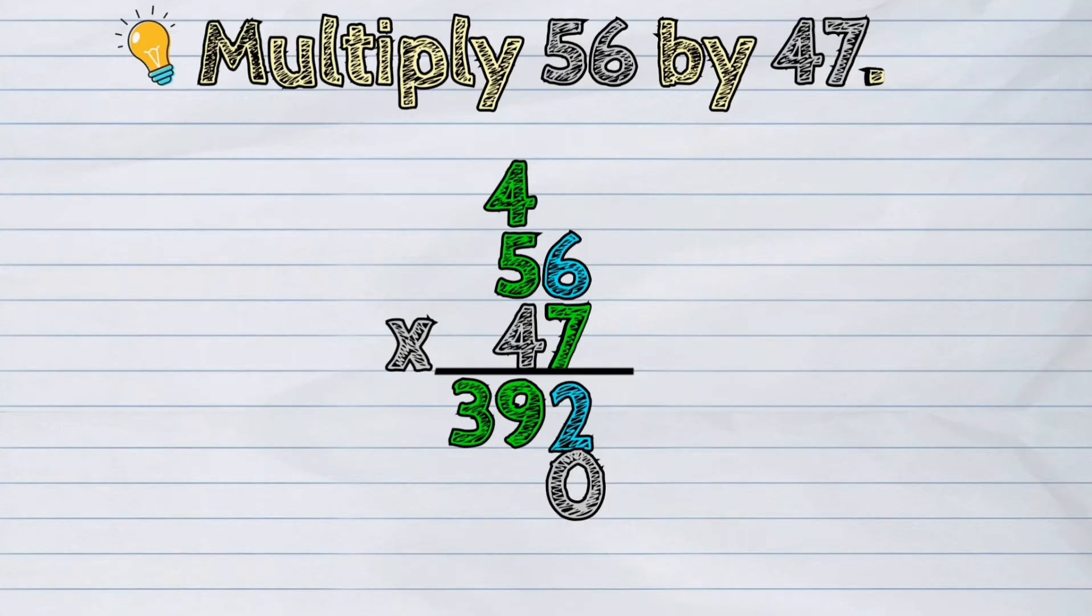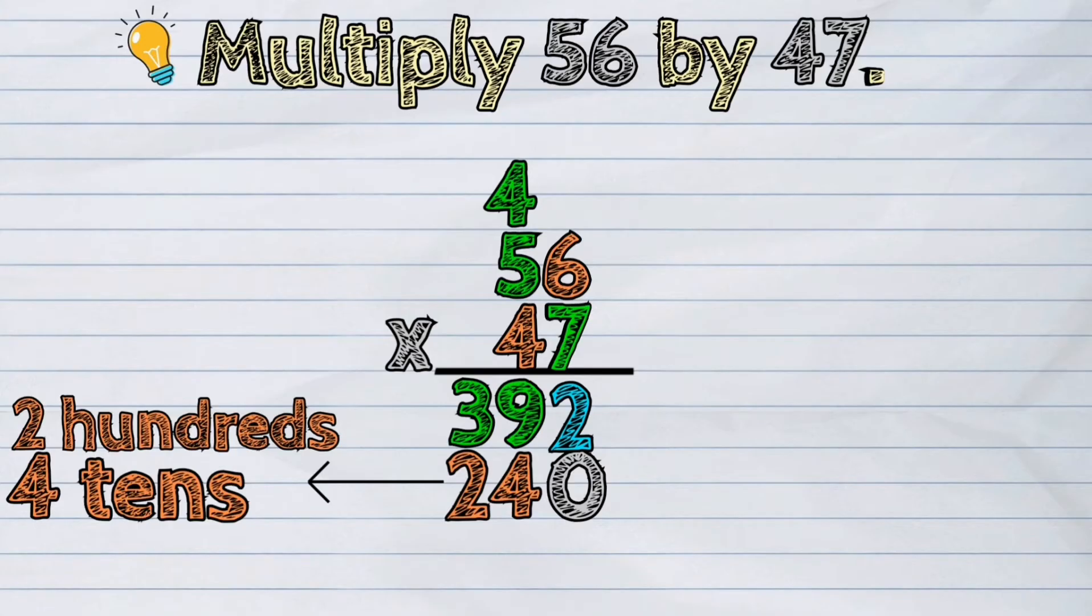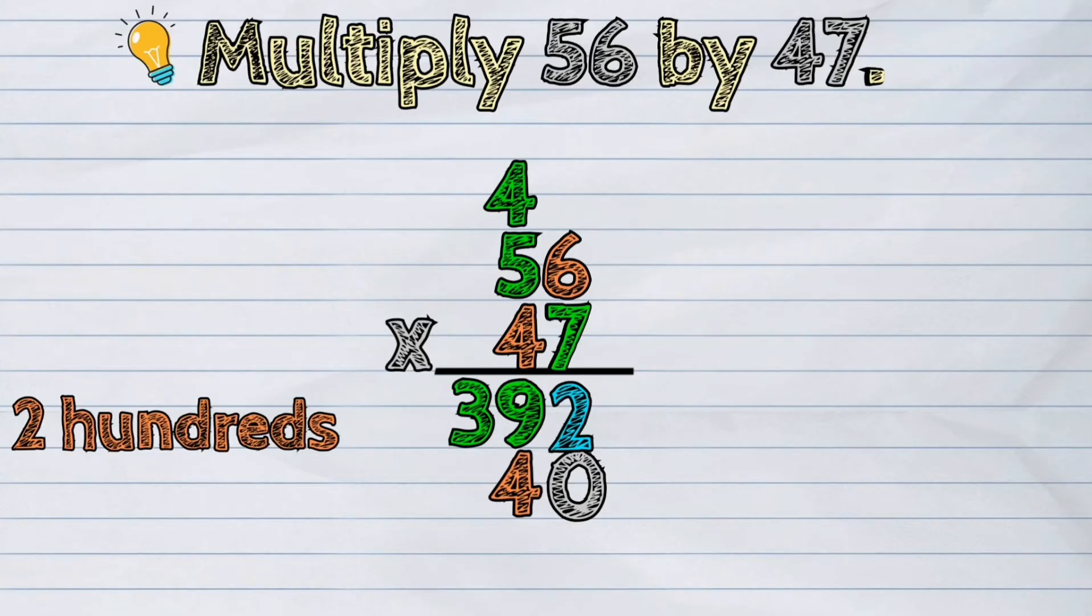Next, multiply the tens on the bottom by the ones on the top. 4 tens times 6 ones is equal to 24 tens. We need again to regroup the number. 24 tens if regrouped is 2 hundreds and 4 tens. Put the 4 tens next to 0 and carry the 2 hundreds above the tens column.